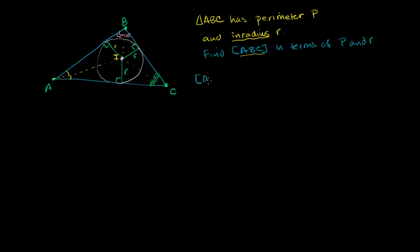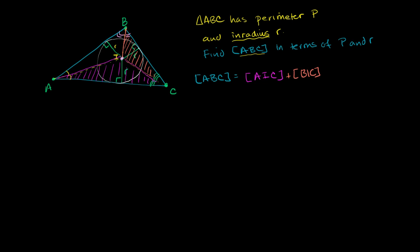The area of the entire triangle ABC is going to equal the area of AIC — shaded in magenta — plus the area of BIC — shaded in orange — plus the area of AIB — shaded in pink. If you take the sum of the areas of these three triangles, you get the area of the larger triangle.